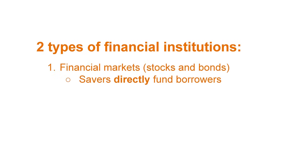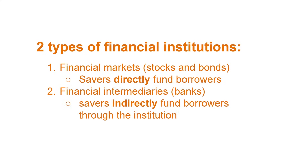Financial markets allow savers to directly provide funds to borrowers — for instance, through buying stocks and bonds. Financial intermediaries, such as banks, allow savers to fund borrowers indirectly. Savers provide funds to banks, and banks provide them as loans to borrowers.